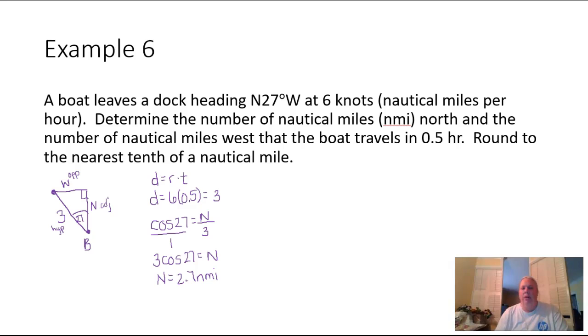All right. Now we're going to figure out what the west side is over here. Since this is the opposite side from our angle and we have our hypotenuse, that means we need to use the sine function. So the sine, with respect to our 27 degree angle, is going to be the opposite side, W, divided by the hypotenuse, 3.